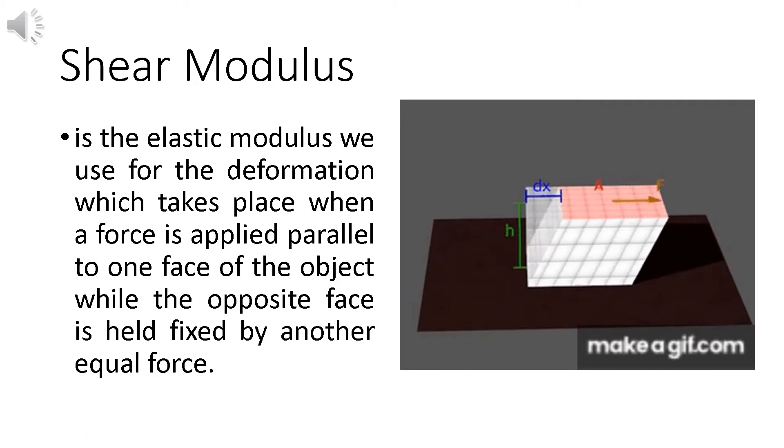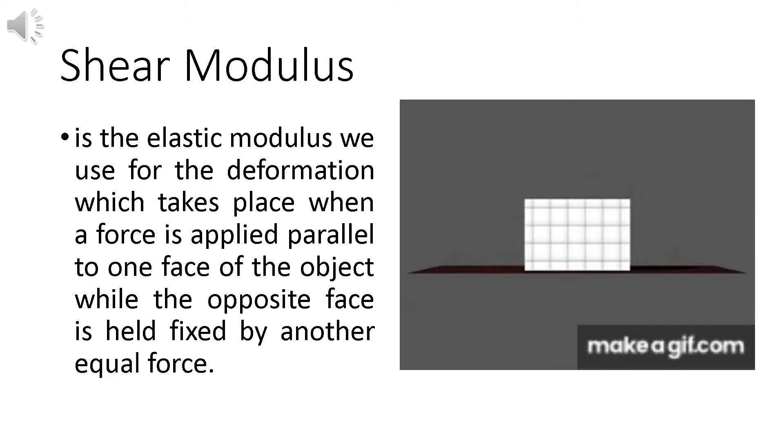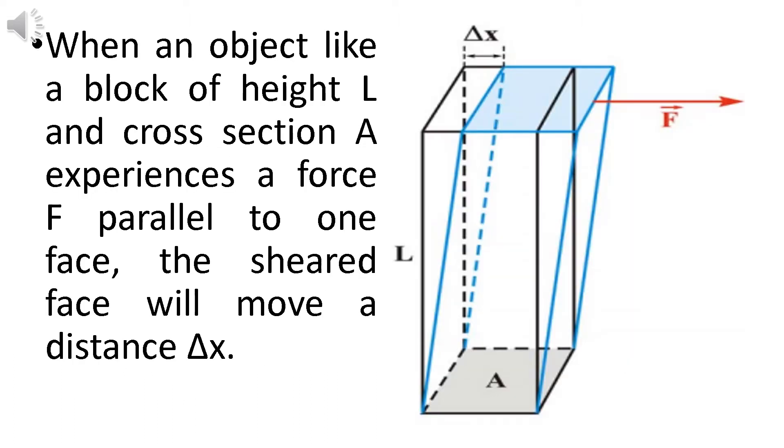Meanwhile, yung surface sa baba ay naiiwan. So itong block natin sa illustration ay may height na L, and meron siyang cross-sectional surface na A. And kapag ang block ay naka-experience ng parallel force, parallel force F, ito ay magdi-displace, and that is the delta X.